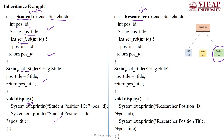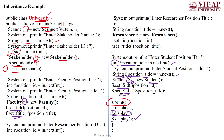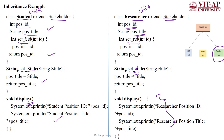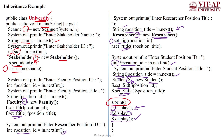The Researcher child class is created with respect to the parent Stakeholder. The same two variables are declared with their respective data types. We take input for position_id as integer and position_title as String. Then we create object r for the Researcher class and call the set methods for id and title. After assigning the values, we call the display method using object r to show the researcher details.